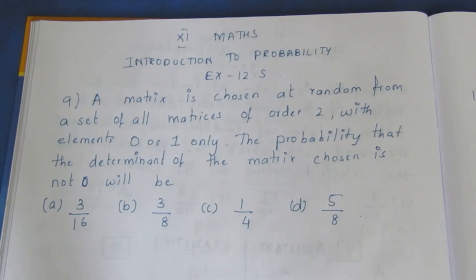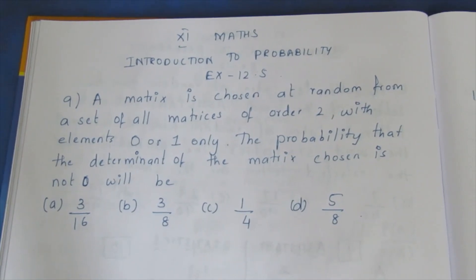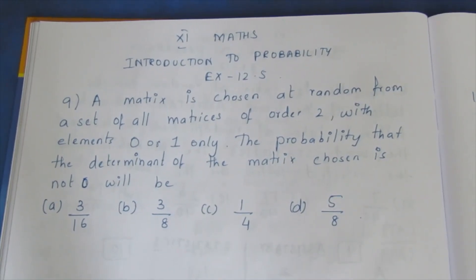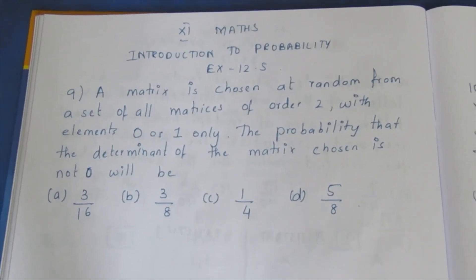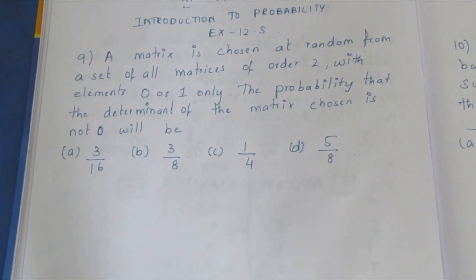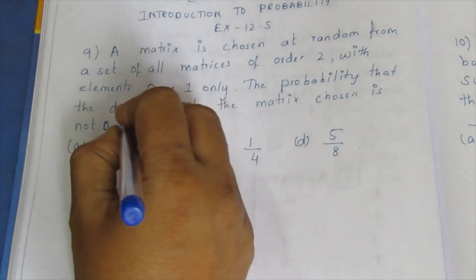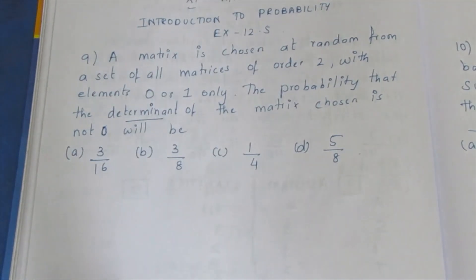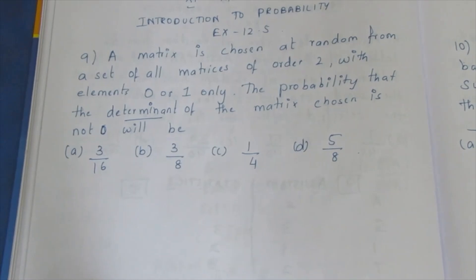We need to find the probability that the determinant of the chosen matrix is not 0. So what we need to find is: P(determinant value is not 0).